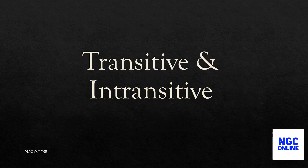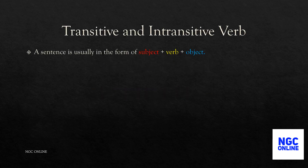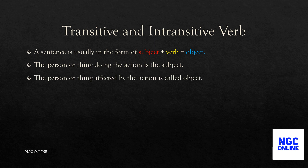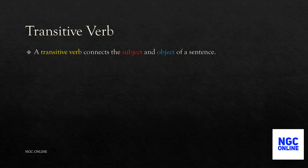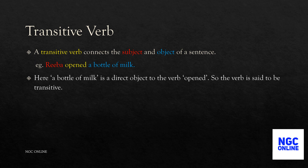Now we are going to discuss transitive and intransitive verbs. A sentence is usually in the form of subject plus verb plus object. The person or thing doing the action is the subject; the person or thing affected by the action is the object. A direct object can be identified by asking 'what' or 'who' to the verb. A transitive verb connects the subject and the object. For example, 'Reba opened a bottle of milk' — here 'a bottle of milk' is a direct object, so the verb 'opened' is transitive.